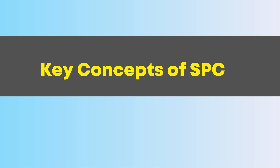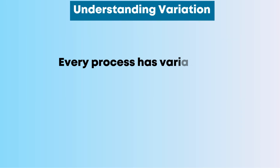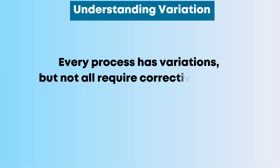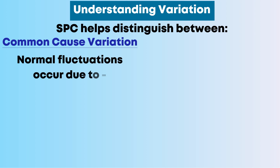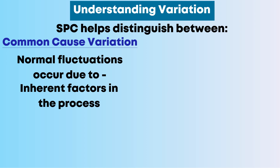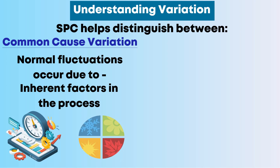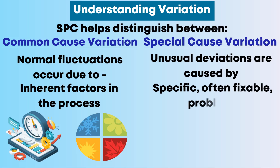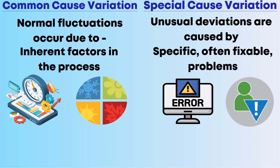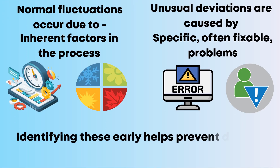Let's discuss the key concepts of SPC. Understanding Variation: Every process has variations, but not all require corrective action. SPC helps distinguish between Common Cause Variation — normal fluctuations due to inherent factors in the process, such as slight differences in machine speed or environmental conditions — and Special Cause Variation — unusual deviations caused by specific, often fixable, problems such as a malfunctioning machine or human error. Identifying these early helps prevent defects.